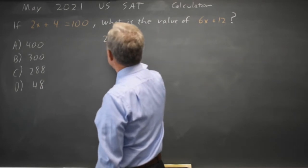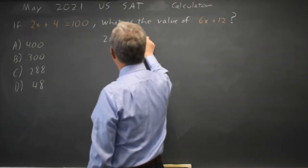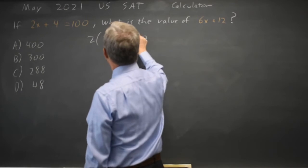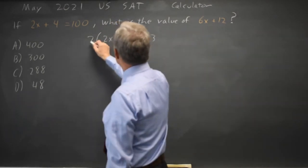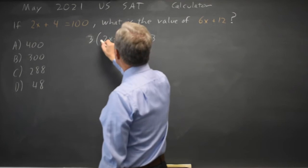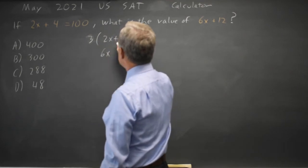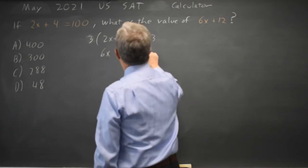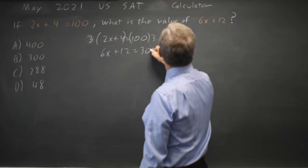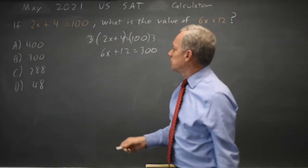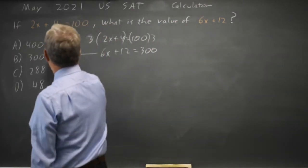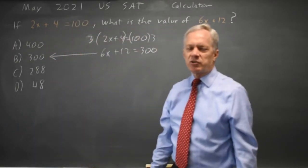So if I take 2x plus 4 equals 100 and I multiply both sides by 3, 3 times 2x is 6x, 3 times 4 is 12, 3 times 100 is 300, and they're asking for 6x plus 12. So we can get the correct answer in one step if we recognize that.